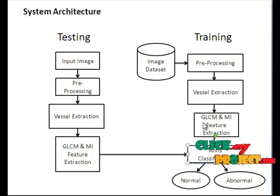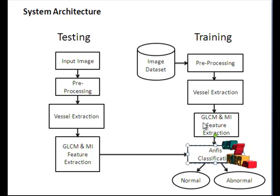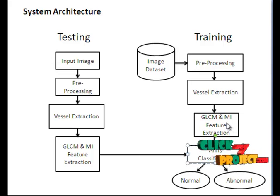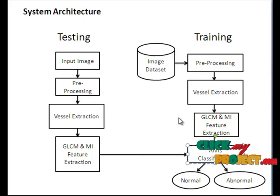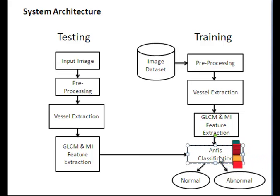We extract GLCM and moment invariant features. GLCM derives statistical information such as energy, entropy, correlation, and sum of squares. Moment invariant captures seven moments including rotation, scaling, and translation. These feature values are passed to the ANFIS classifier — the Adaptive Neuro-Fuzzy Inference System — which is a combination of a neural network and a fuzzy system, and it classifies the results and trains on the features.